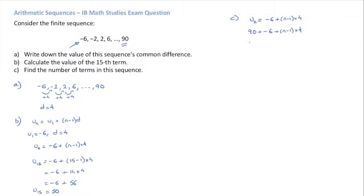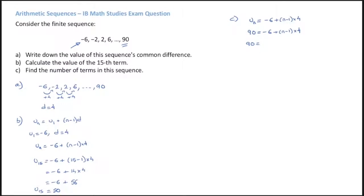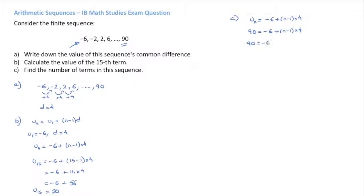The first thing I'm going to do here is I'm going to rewrite this with the 4 on the other side of the parentheses. This makes it easier to distribute. That's 4 times N minus 1. This leads to 90 equals negative 6 plus 4N minus 4.